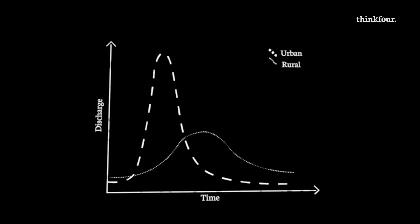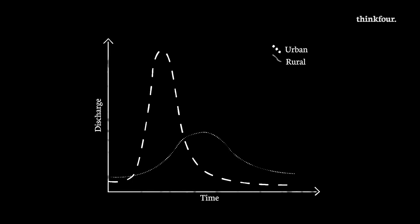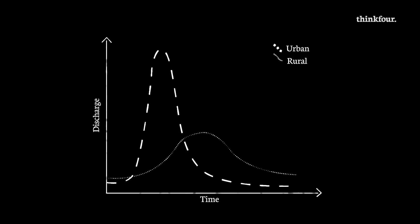When interpreting the hydrograph, look at the shape and decide whether it's representative of an urban or rural area. If you have a gentle curve, it's a rural area, whereas if you have a steep curve, it's an urban area. Now, which factors could you use to explain your graph? Let's consider this using an urban hydrograph.